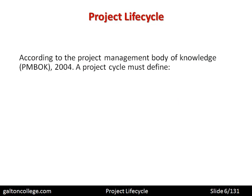According to the Project Management Book of Knowledge — the PMBOK, 2004 — a project lifecycle must define the activities and requirements in each phase. So a project must specify what its activities and requirements are for each phase: the initiation phase, the planning phase, the production or implementation phase, and finally the closure phase. Whatever the number of phases, there must be clear requirements for each one.